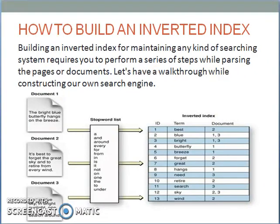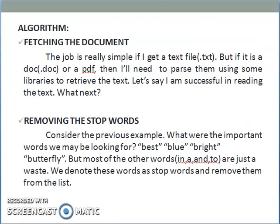Next, we'll see how to build an inverted index. Building an inverted index for maintaining any kind of searching system requires you to perform a series of steps while parsing the pages or documents. The first step is to fetch the document — if it's a text file the job is simple, but if it's a document or a PDF, you need to parse it using some libraries to retrieve the text. The second step is to remove the stop words. The important words we look for will be like 'best', 'blue', 'bright', and 'butterfly', but words like 'in', 'a', 'and', 'to' are just a waste — we denote these as stop words and remove them from the list.